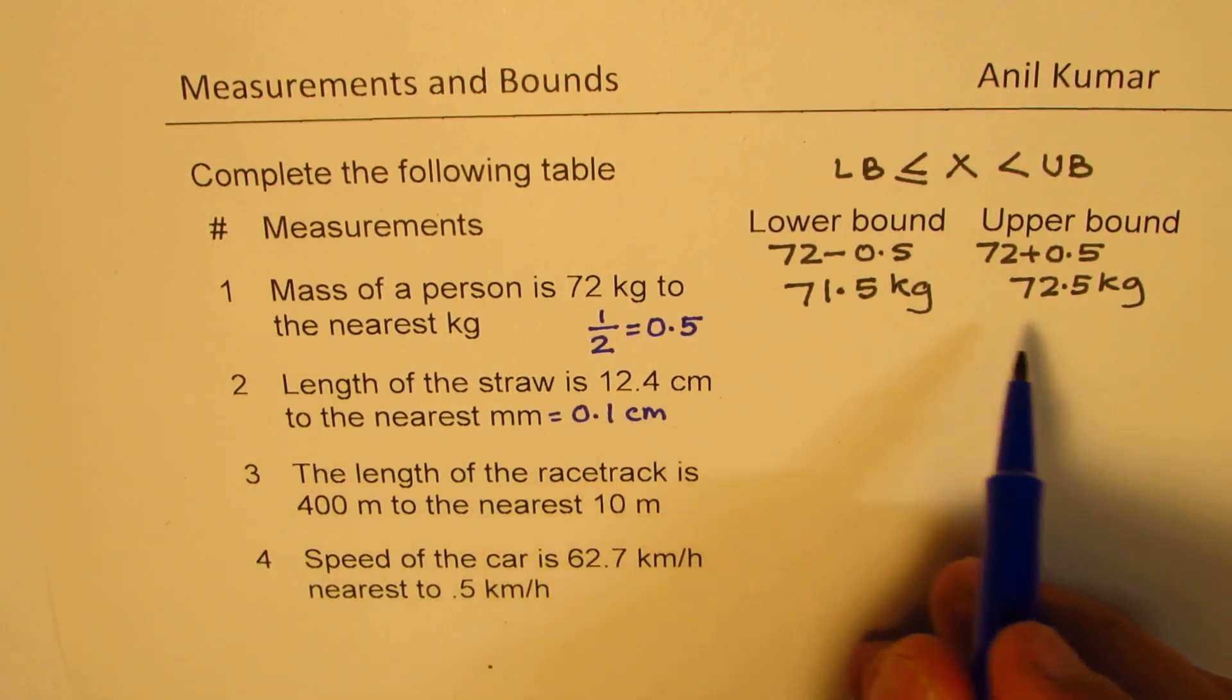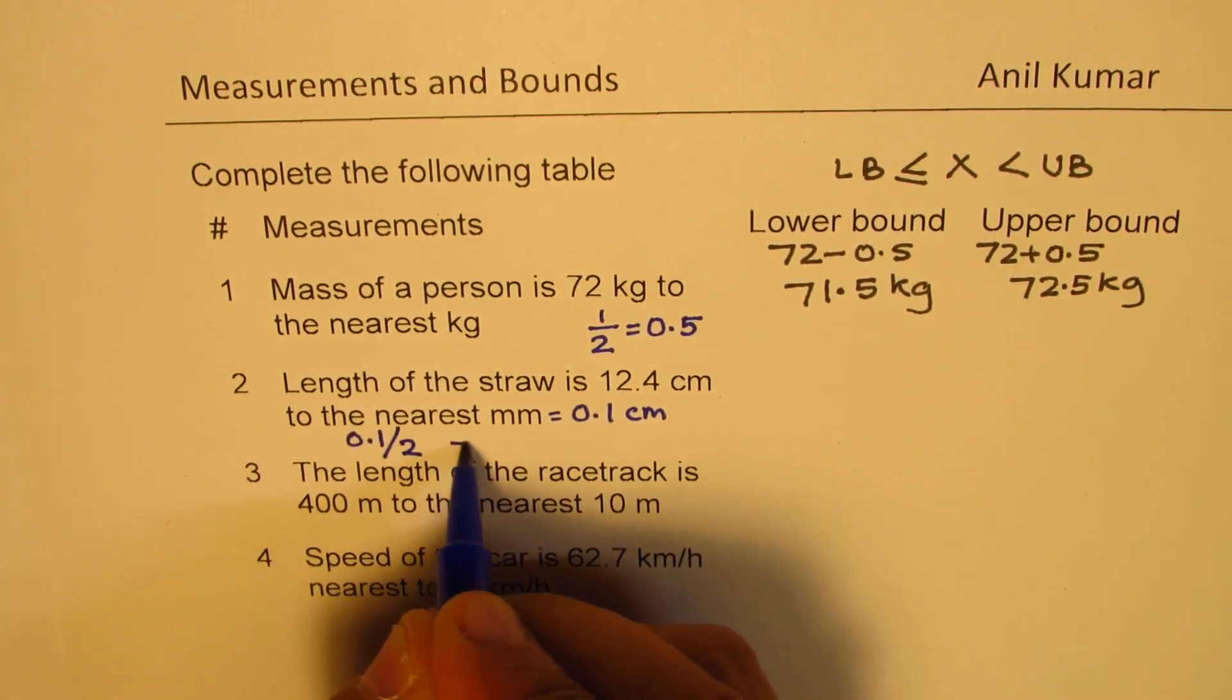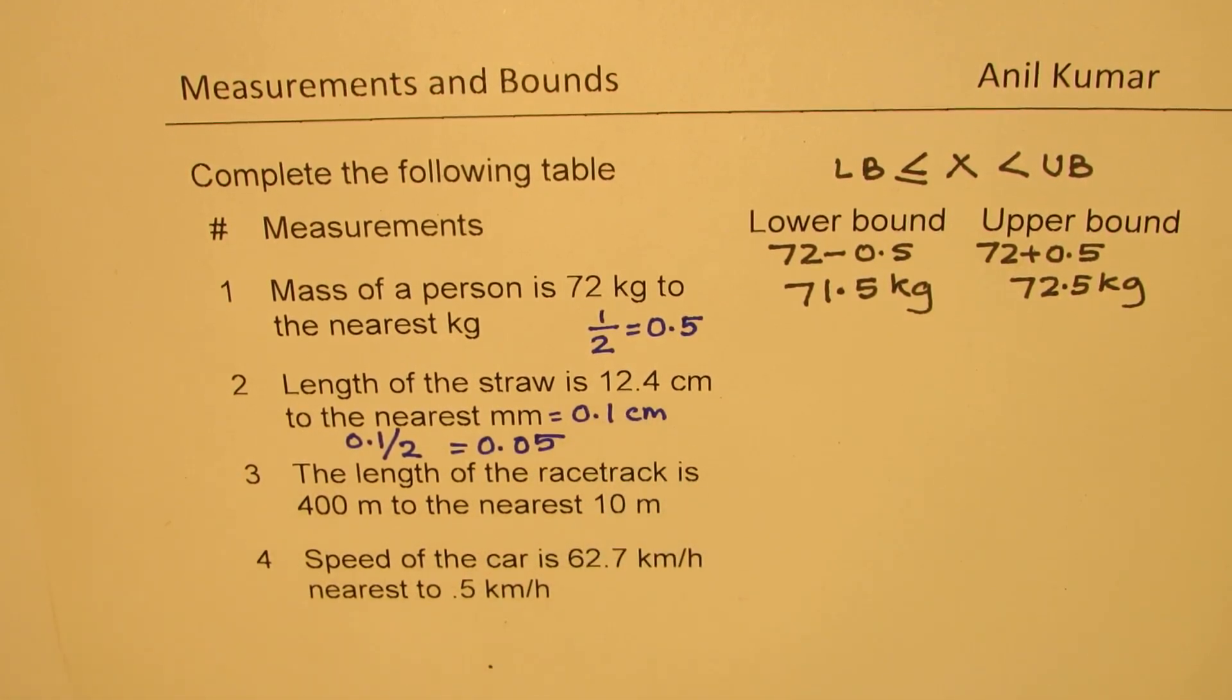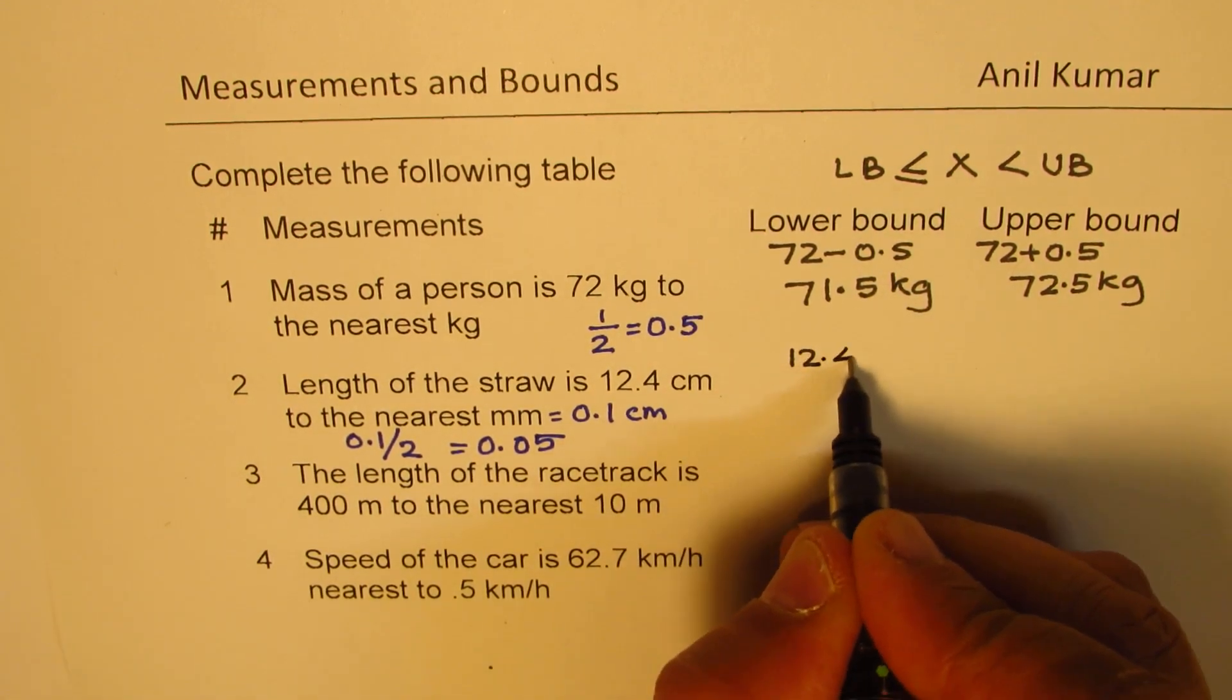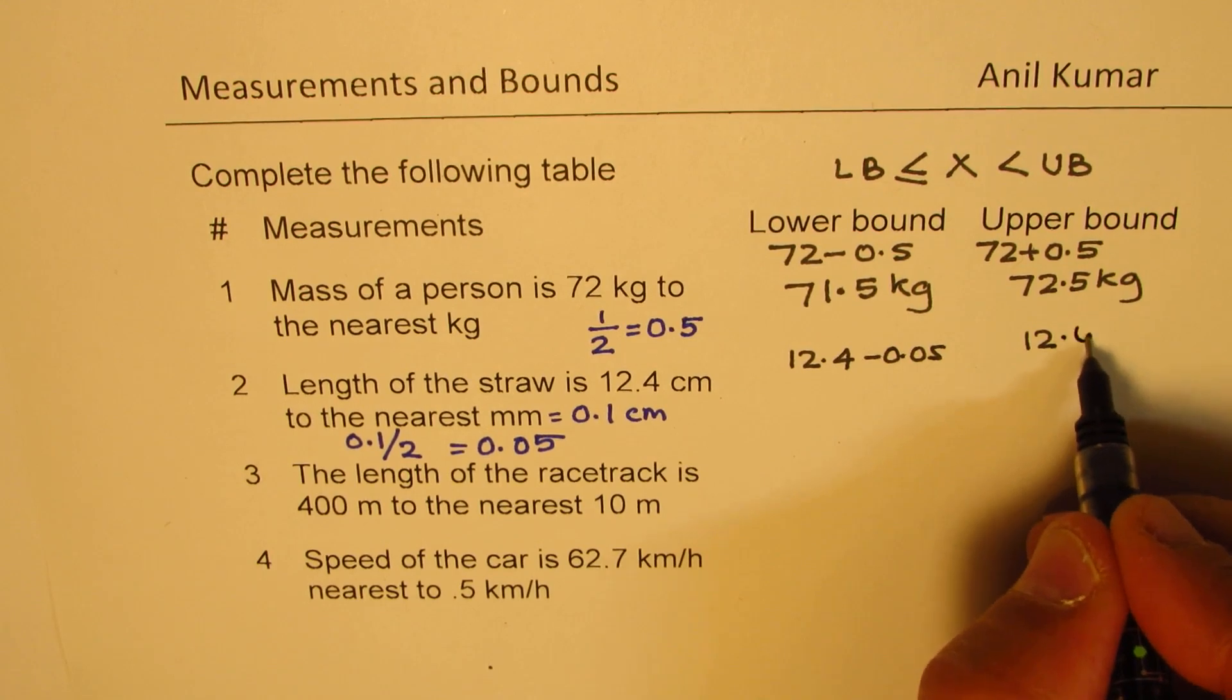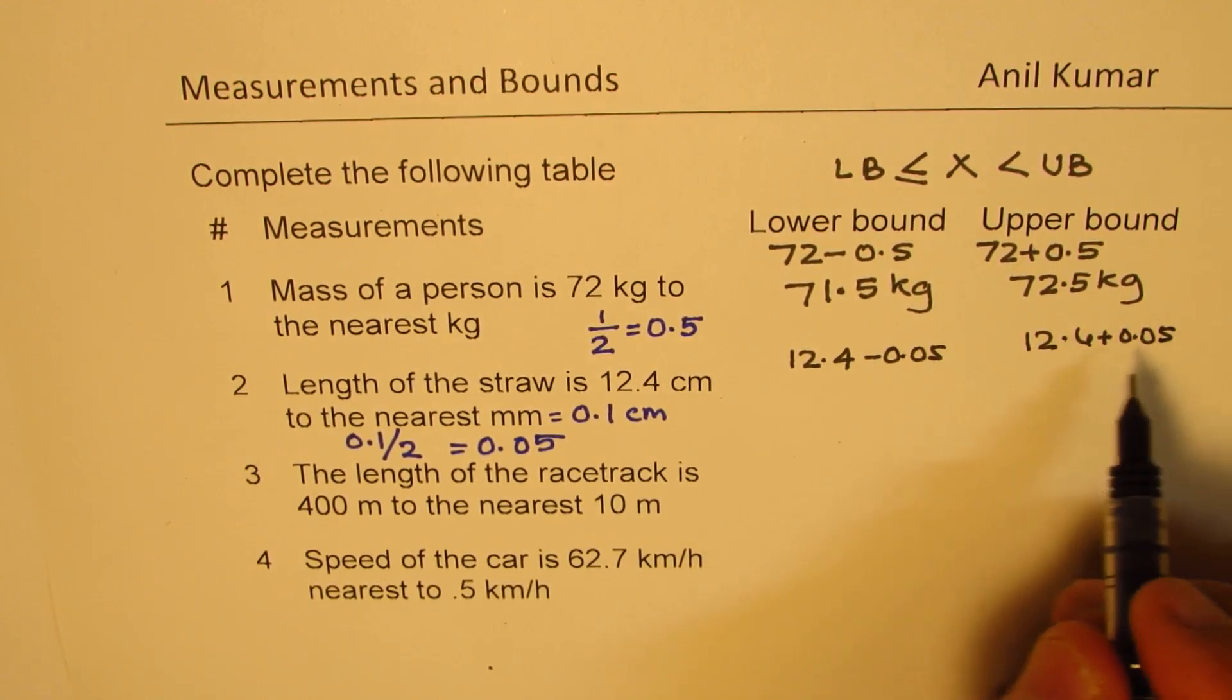So what are we going to add and subtract? We are going to do 0.1 divided by 2, which is 0.05. So to this value, 12.4, we are going to take away 0.05, and we are going to add 0.05.